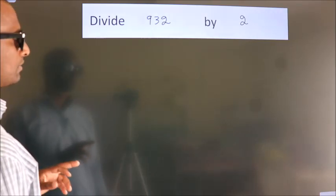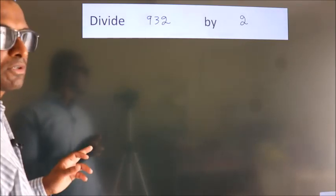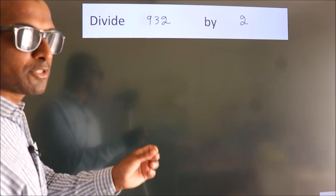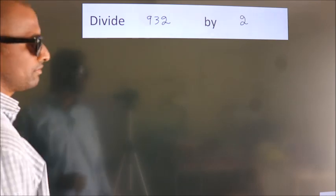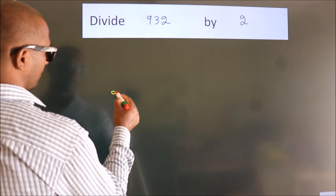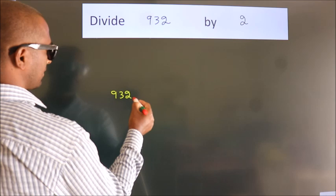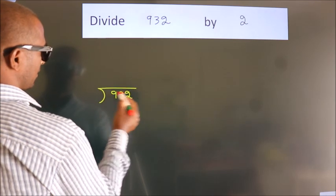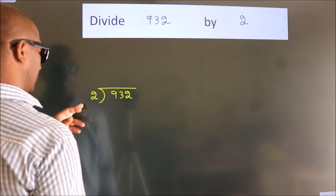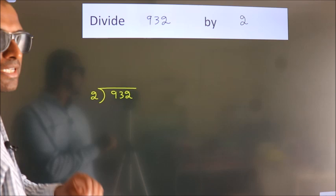Divide 932 by 2. To do this division, we should frame it in this way. 932 here, 2 here. This is your step 1.